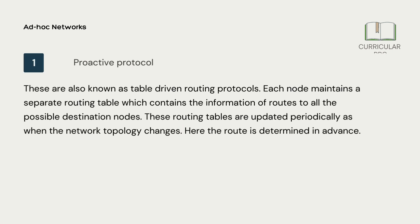Number 1, proactive protocol. These are also known as table-driven routing protocols. Each node maintains a separate routing table which contains the information of routes to all the possible destination nodes. These routing tables are updated periodically as when the network topology changes. Here the route is determined in advance.